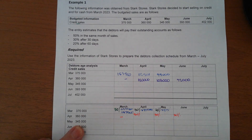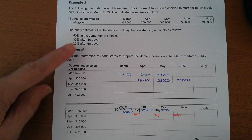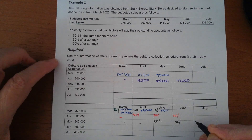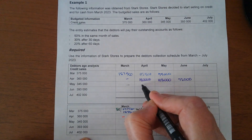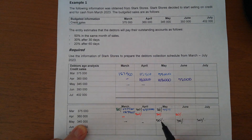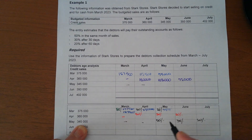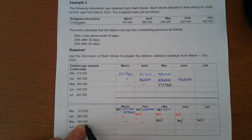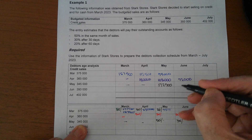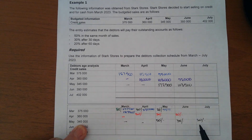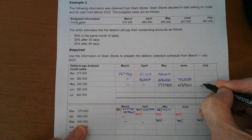For May sales, we will start collecting in May and the first month will be 50%, the second month 30%, and the last month 20%. So R345,000 times 50% gives me R172,500 collected in May. Then of R345,000, 30% in June gives R103,500. And then in July we will receive 20% of the amount, which equals R69,000.